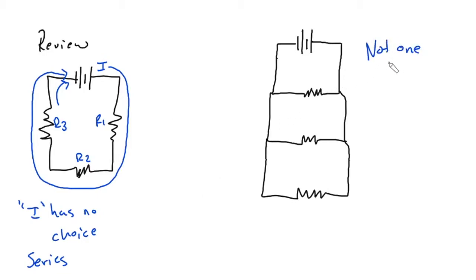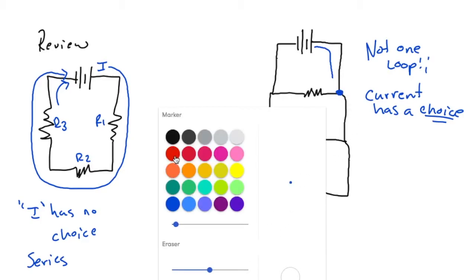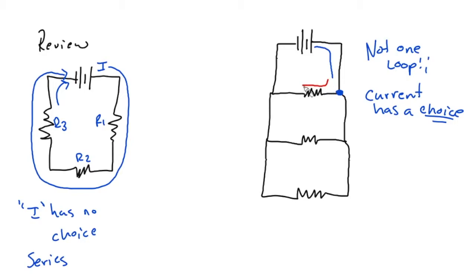Now, okay, and what we notice is that now there is not one loop. Current has a choice, all right, and what I mean by that is it comes out of the battery, then I get to this spot right here and current can now do two things: it can zag and come this way or it could come down this way. And once again it could go this way or it can go this way, and it will continue to do that.